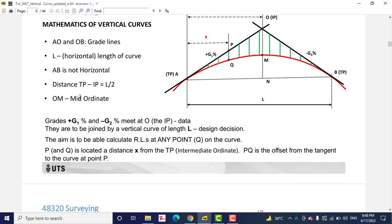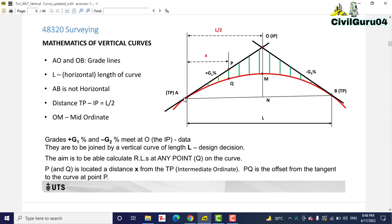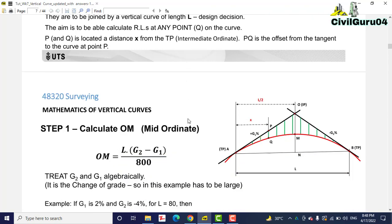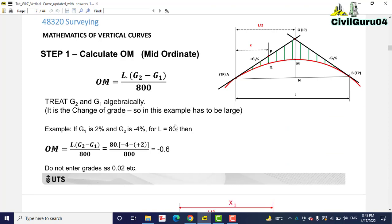Here you can see we have some formulas about how to calculate distance for one tangent and another, then we can calculate also change from them. In step one you can see we will calculate the OM, which is actually the mid ordinate for the vertical curve. Here we have the formula: L for length, G2 grade 2 minus grade 1, divided by 800.